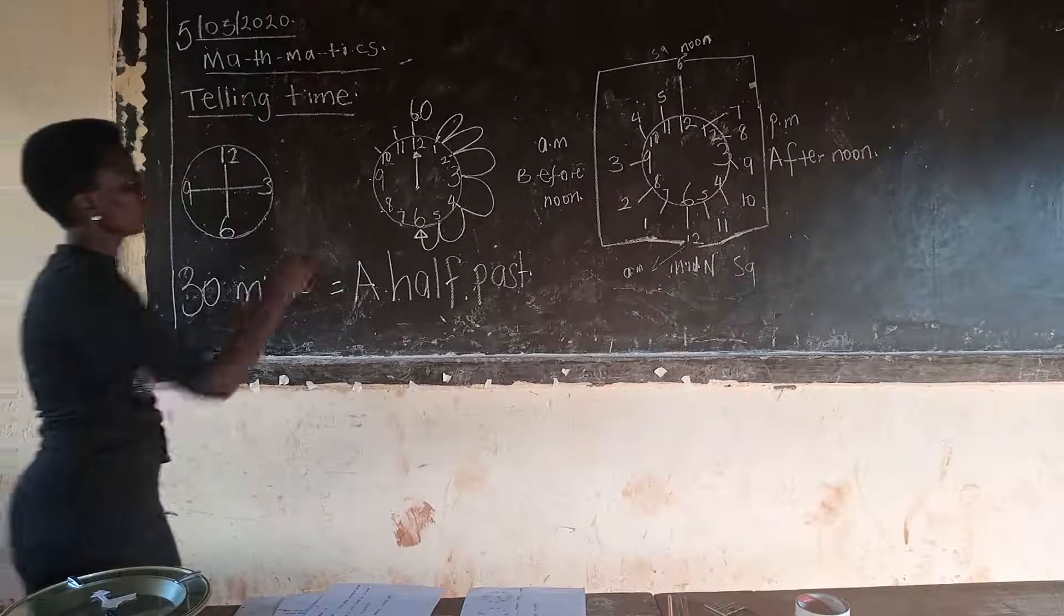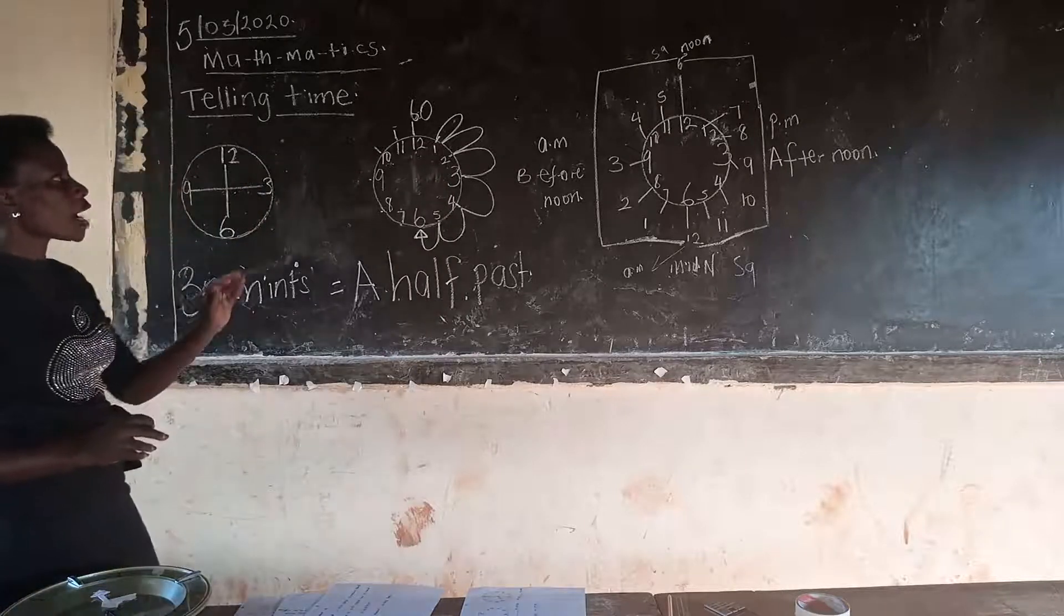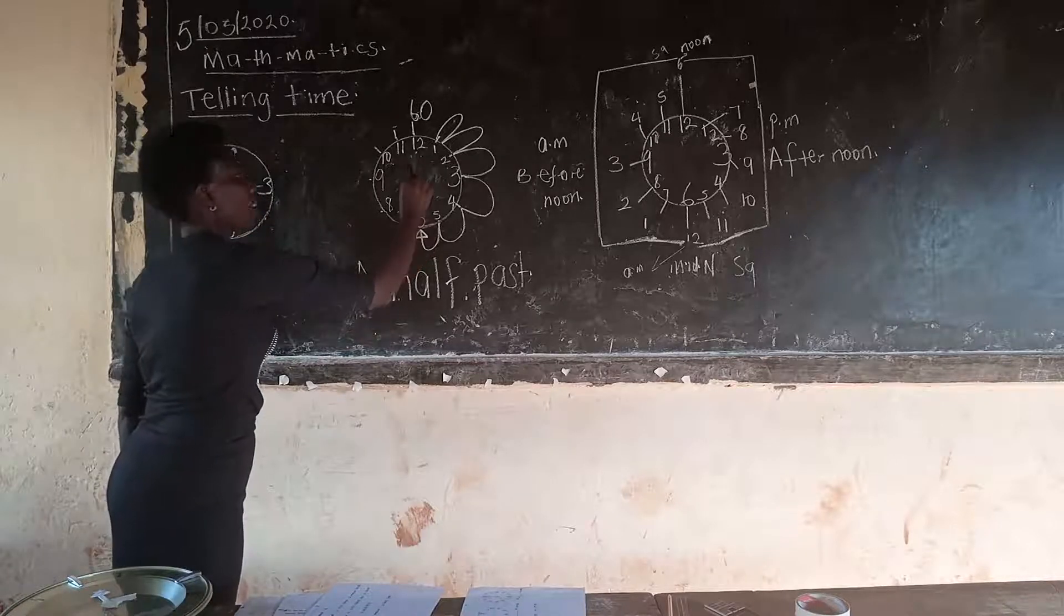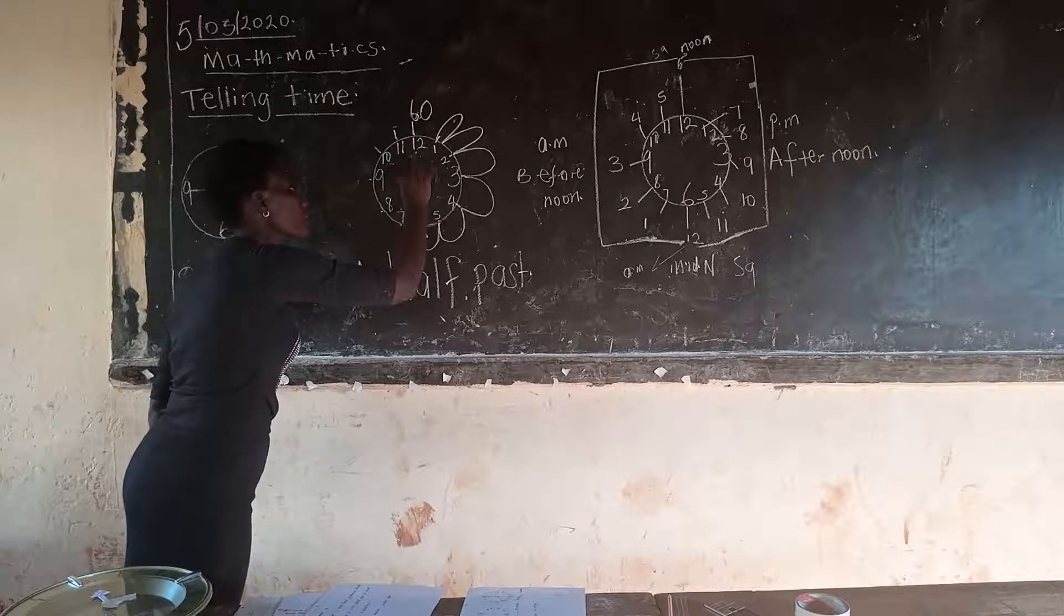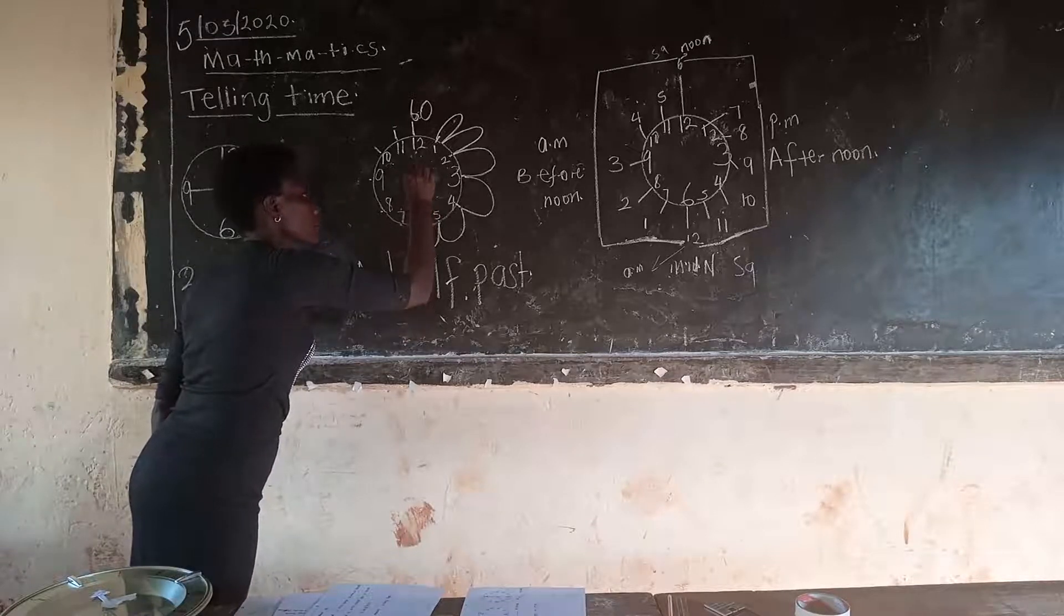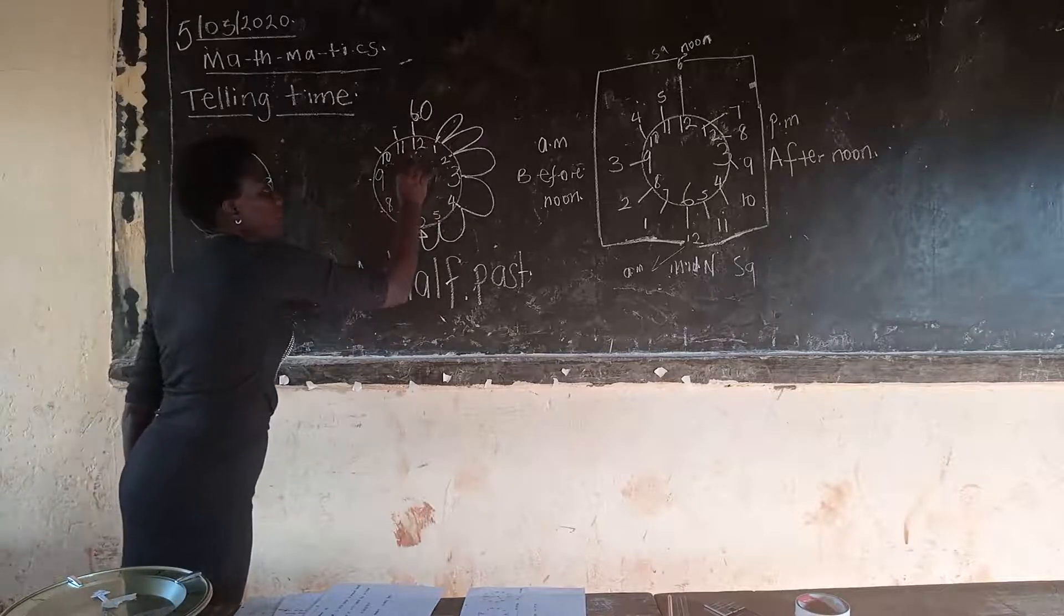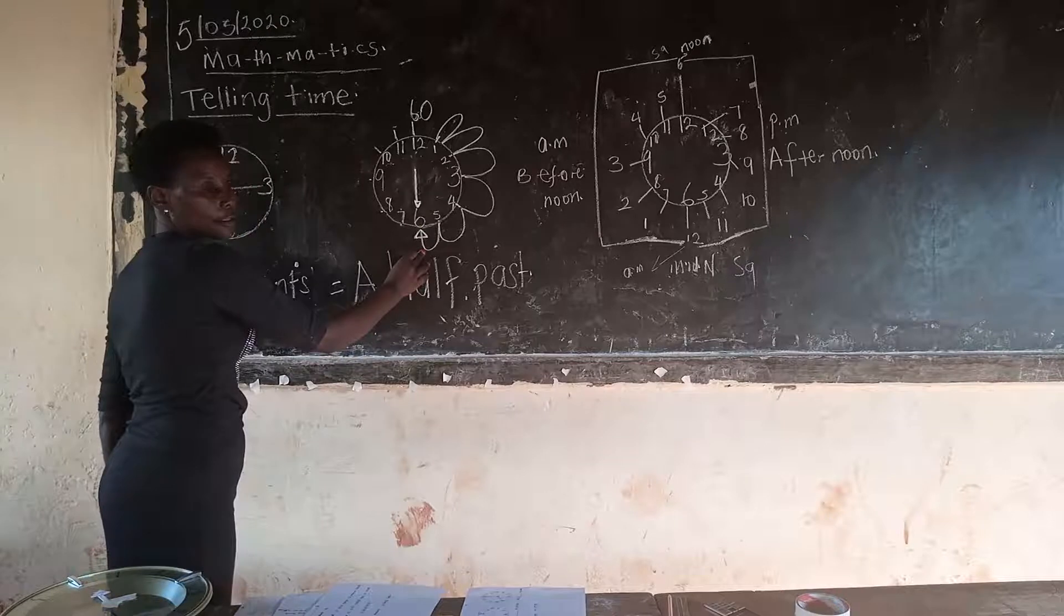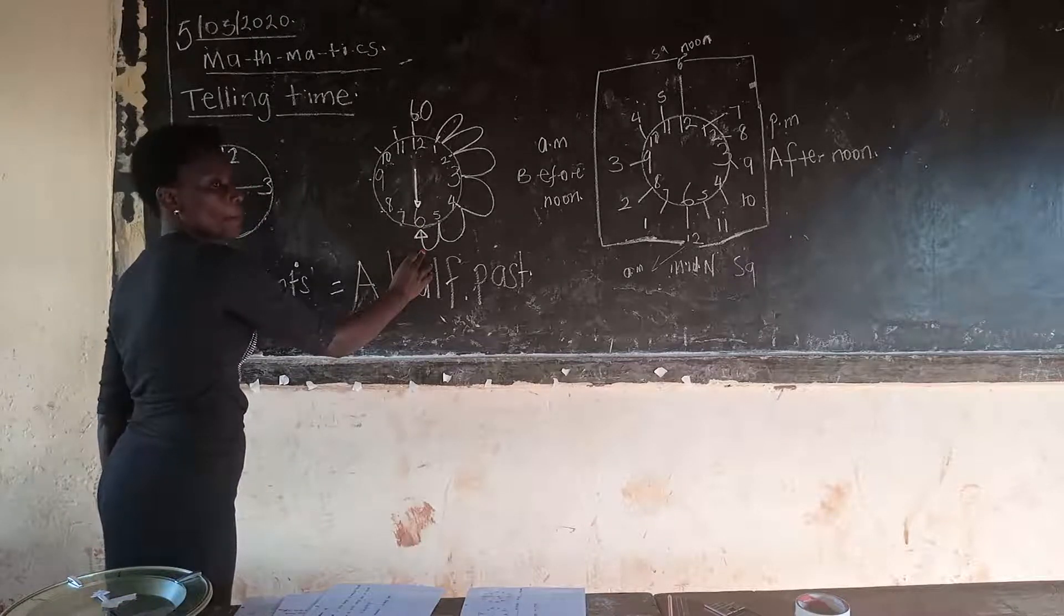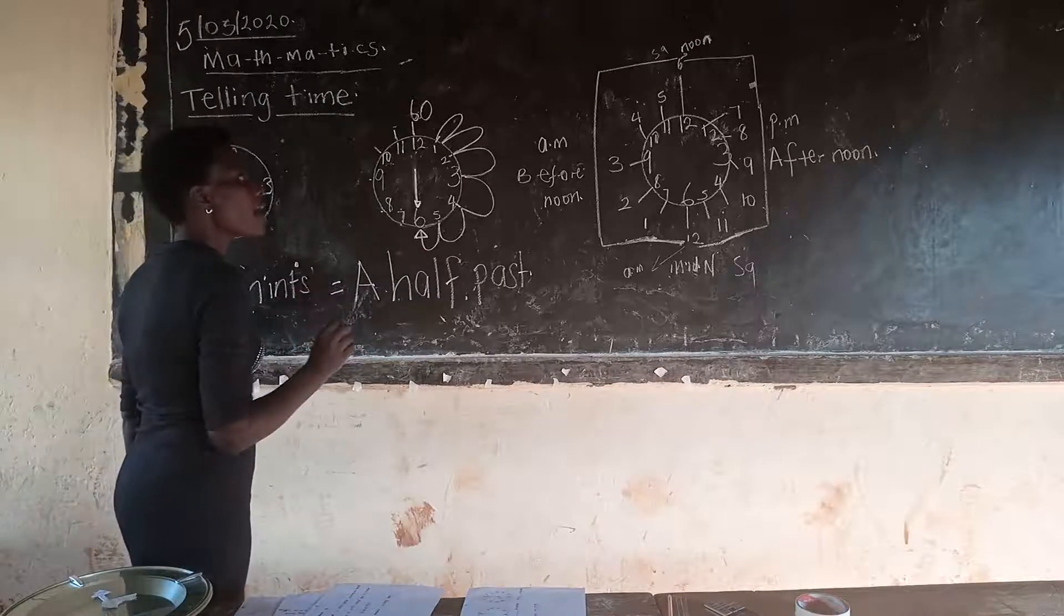This time, it is at 6, not up at 12. And when it is at 6, the long hand must face down where 6 is. And these are 30 minutes. And there we can say it is half past. If I don't want to say 30 minutes, I can say half past.